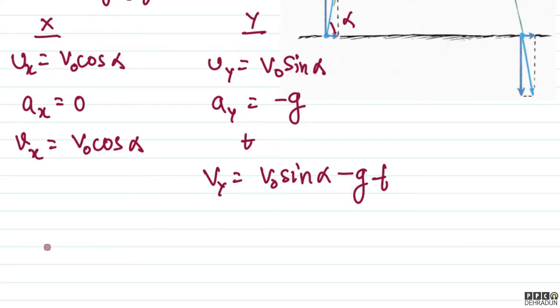So from these two directions, we get the velocity vector. The velocity is v-naught cos alpha i-cap plus v-naught sin alpha minus gt j-cap. You can understand here that during the first half of the journey, v-naught sin alpha minus gt is positive, and during the second half it becomes negative. So the y component of velocity is positive initially, then becomes negative.